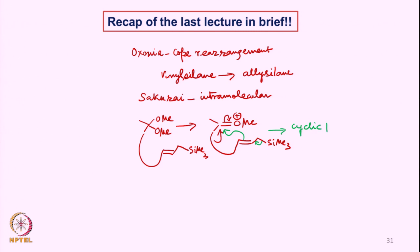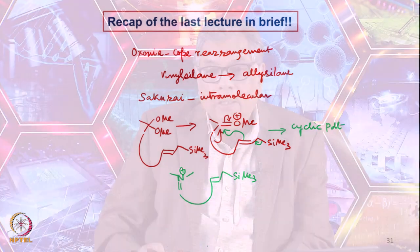We also saw the ammonium ion being formed, and the ammonium ion could then react in an intramolecular fashion with an arylsilane, leading to bicyclic products. We then discussed two natural products in detail. Now we will see the remaining aspects of allylsilane-based chemistry and some other interesting reactions.